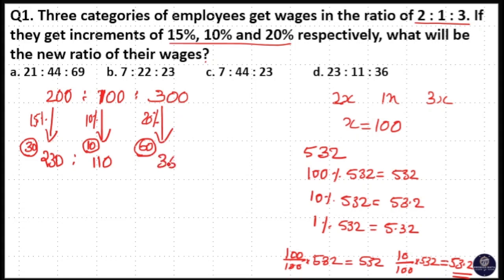So your new ratio: just cancel off these zeros here, that is 23 is to 11 is to 36, which is your answer. So option D is your answer.